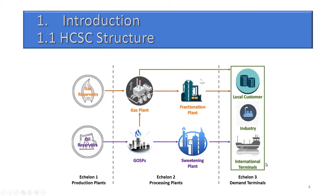In petroleum industries, they don't call it echelon one, two, three — they call it upstream, midstream, and downstream. Upstream is extraction and production; midstream is processing; downstream is customer demand satisfaction. In most petroleum companies there is overlapping and no clear boundary between each stream — it depends on the scope of the company. This work focuses on the crude oil supply chain, natural gas supply chain, and natural gas products supply chain, such as propane and butane.